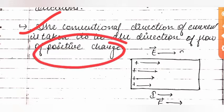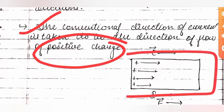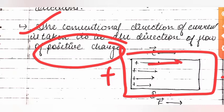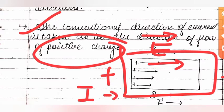In the figure, you have a conductor with a positive end and a negative end. The positive charges are repelled by the positive terminal, and the direction of the electric field is from positive to negative inside the conductor.